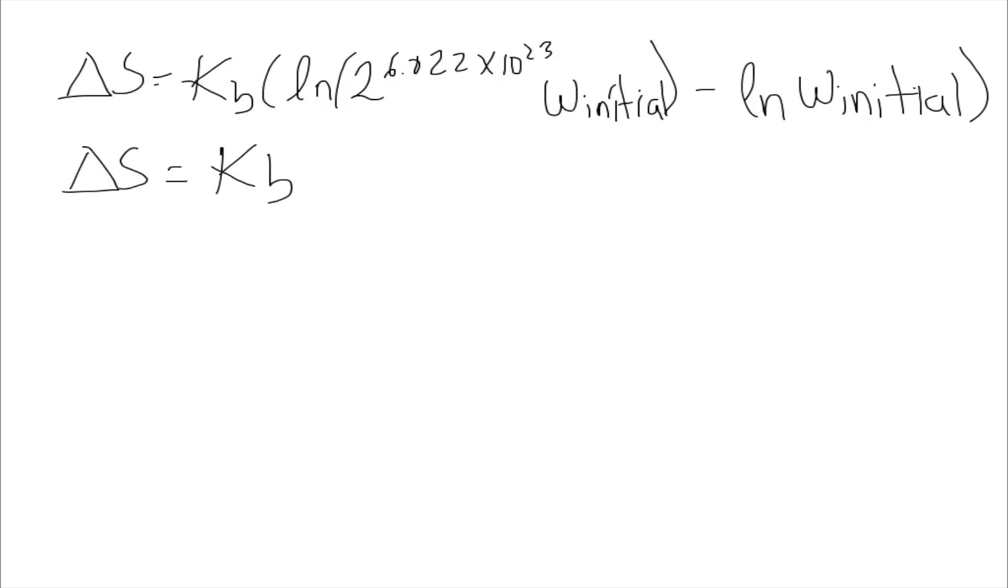So that will look like this: we bring the power down to multiply, and the logarithm, we have 6.022 times 10 to the 23 times the logarithm of 2, this is the number we have right here, that's plus the natural logarithm, these are all natural logarithms, of W initial.